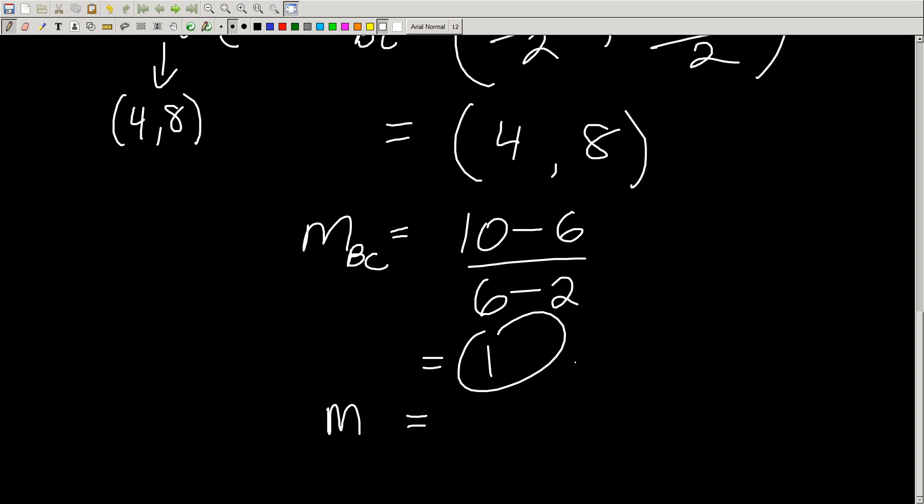What is the negative reciprocal of 1? Oh, you betcha, it's negative 1. So you have the slope now and you have a point on your right bisector.